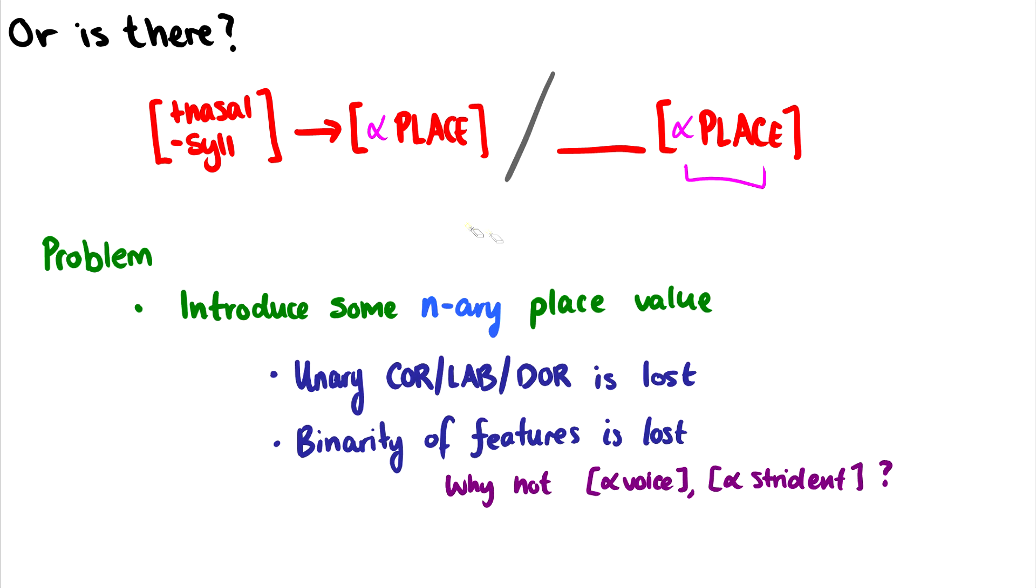Now, of course, there's some problems with it. And one of the big problems is that, if we do alpha place, then we've lost this notion of these unary features, coronal, dorsal, and labial, that phonologists have fought for for quite a long time. And we also kind of lost the whole binarity of features. I mean, if we can have these place features that have more than just plus or minus values, then can't we have different levels of voice and different levels of sonority and different levels of stridency in our features? Why is it just place that has this special property? It seems like we're kind of taking this really strict and tight system and saying, we need something to capture generalizations of language more. So let's make this one exception. And we'll just accept this exception and try not to do it with other things.